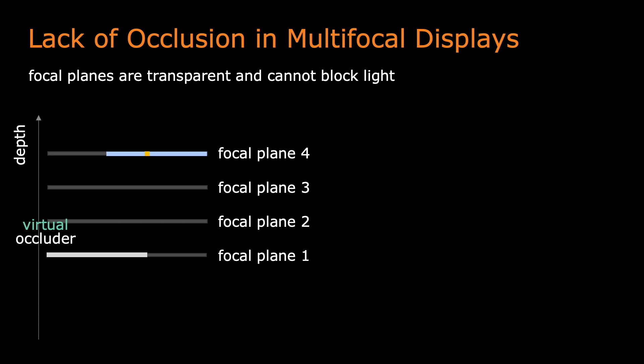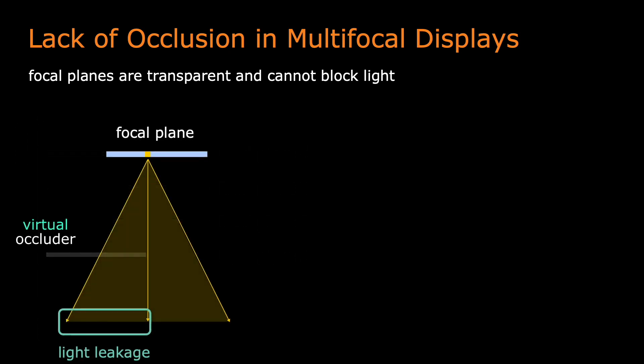However, because the focal planes are transparent, the front focal planes are unable to block light emitted by the back focal planes. This means that light emitted from the back can easily leak through a front virtual occluder. The light leakage significantly weakens the occlusion cues rendered by multifocal displays.